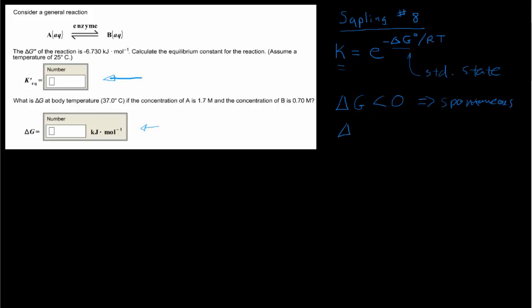If delta G is positive, then we have an unfavorable process, a non-spontaneous process. And if delta G is exactly equal to 0, then we've got a process that is at equilibrium. So neither the forward direction nor the reverse direction of that process is favored. We would be at equilibrium.